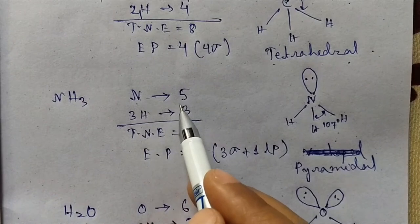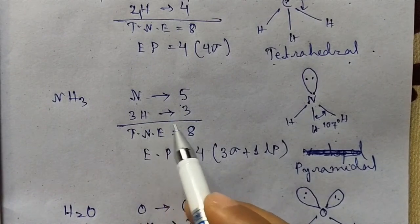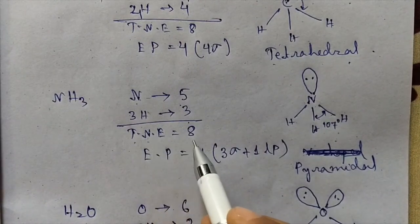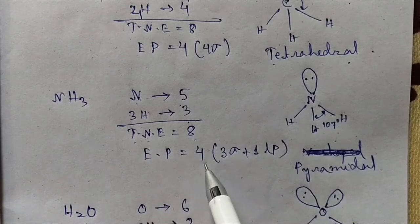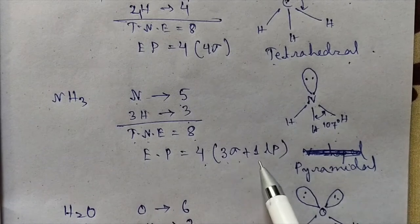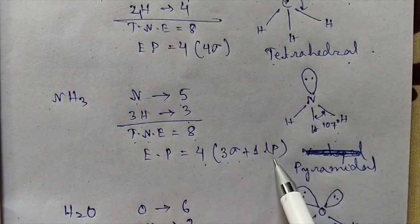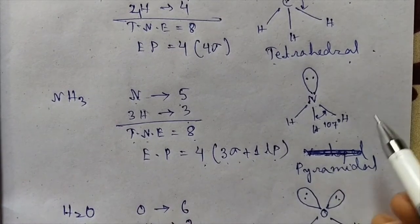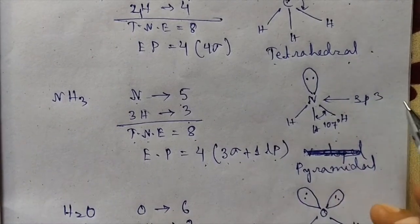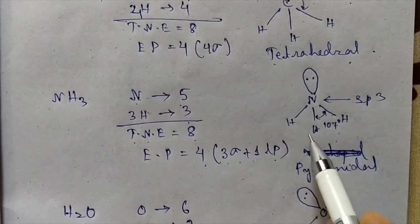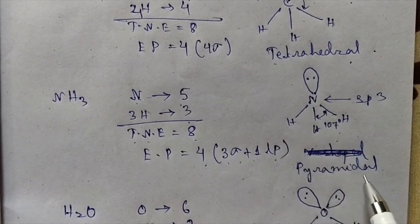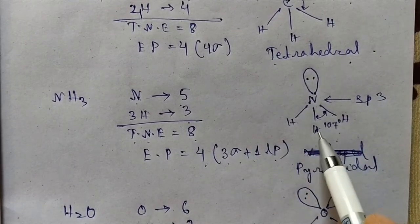In case of NH₃, nitrogen has five valence electrons and three hydrogens will contribute three, so total number of electrons equals eight, electron pairs equal four. For three hydrogens we will get three sigma bonds plus one lone pair. Here also the hybridization will be sp³ and the structure is called pyramidal geometry.